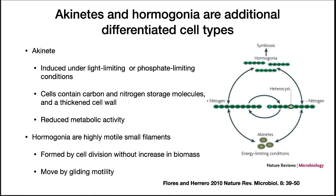Anabaena forms two other types of differentiated cells. Under light-limiting or phosphate-limiting conditions, the bacterium forms akinetes, which are a type of resting structure. The cell contains carbon and nitrogen storage molecules, a thickened cell wall, and reduced metabolic activity. These structures help them survive winters in temperate zone lakes. Hormogonia are highly motile small filaments that allow a colony to spread to other areas. They form by cell divisions without an increase in biomass and are motile by gliding motility.